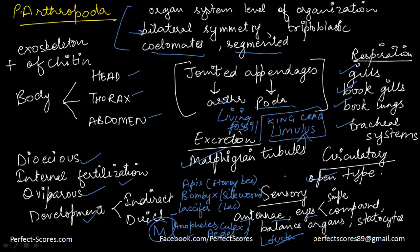In this video we have covered three phyla: phylum Aschelminthes, phylum Annelida, and phylum Arthropoda. I hope this video was useful. If you want to share any feedback, you can do so at perfectscores89@gmail.com. Don't forget to watch all the other videos on Animal and Plant Kingdom classification as well. Thank you so much for watching.